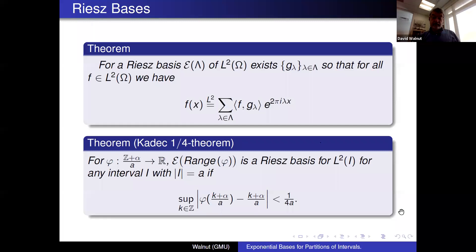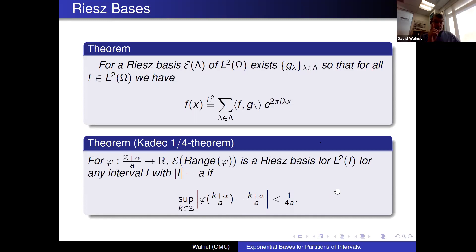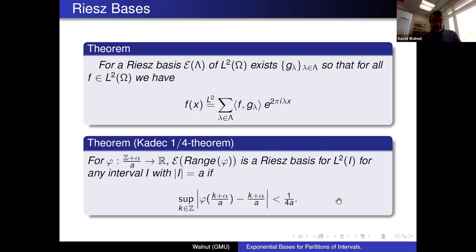For Riesz bases we also have a Fourier series type expansion: Riesz bases are minimal, so they have a biorthogonal sequence, and using that to form coefficients we get an expansion result. The first step going from an orthogonal basis to a Riesz basis for complex exponentials is Kadec's theorem. I'll state it here in the form we'll use in the remainder of the talk: if we think of a map φ from a shifted and dilated integer lattice into the real numbers, then the range of φ is a Riesz basis for L²(I) for any interval I of length a, provided the perturbation is strictly less than 1/4 of the spacing.